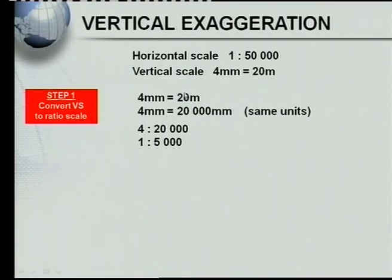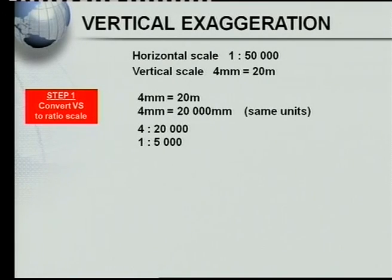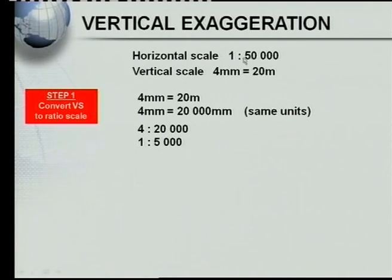So, I've got 4 millimeters equals 20 meters. Now, see what I've done here — I've converted meters to millimeters. So I've got 4 millimeters equals 20,000 millimeters. In other words, we've got the same units. And when I've got the same units, then it becomes very easy. Here I've got 4 to 20,000. If I divide that 4 into 20,000, then I will have 1 to 5,000. So now I've got my horizontal scale as 1 to 50,000 and my vertical scale as 1 to 5,000, both in ratio format.